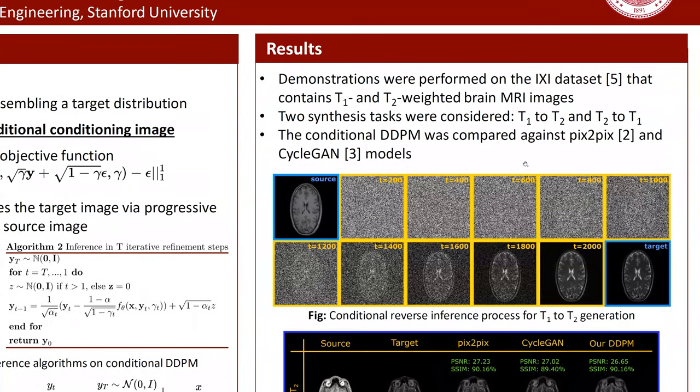We performed our demonstrations from the IXI dataset that is publicly available. The IXI dataset contains T1 and T2 weighted brain MR images. As their combinations, we consider two synthesis tasks: one is to synthesize T2-weighted image from T1-weighted image and the other one is to synthesize T1-weighted image from T2-weighted image.